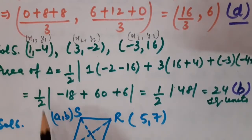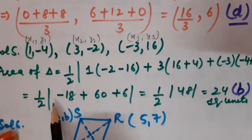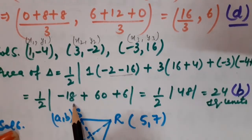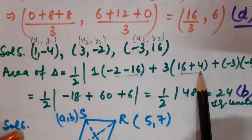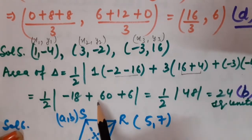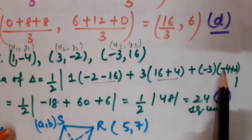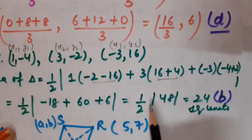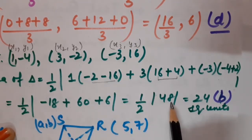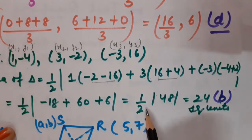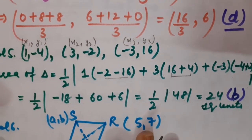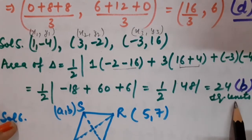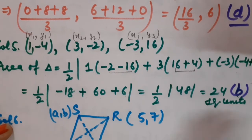So −2−16 gives −18 into 1, that is −18; plus 16+4 gives 20, and 20×3 is +60. Then −3×(−2) gives +6. After simplifying I have got half × |48| square units. Since modulus gives the numerical value, we get 48, so the answer is 24 square units. The correct option is option number B.